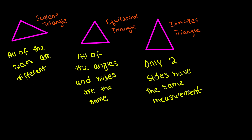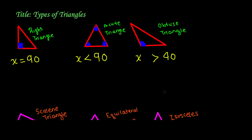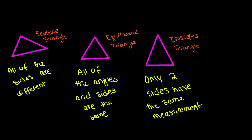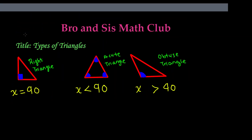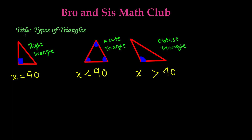That's it for this video. I hope you guys learned about the different types of triangles. Remember, this is only the basic types of triangles — these are the main triangles you will learn about in 7th grade. To revise: we have right triangle, acute triangle, obtuse triangle, scalene triangle, equilateral triangle, and isosceles triangle, in two different categories. Thank you for watching. If you have any questions, please leave them in the comment section below and we'll try our best to answer them. See you guys in the next video. Bye!